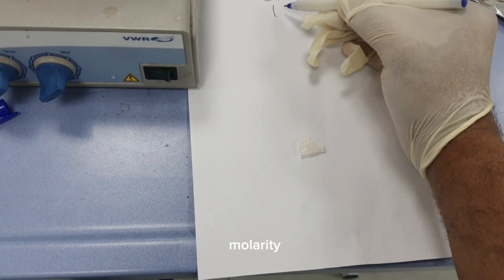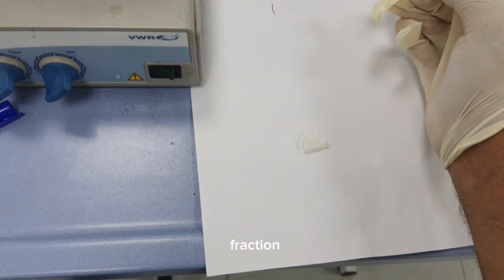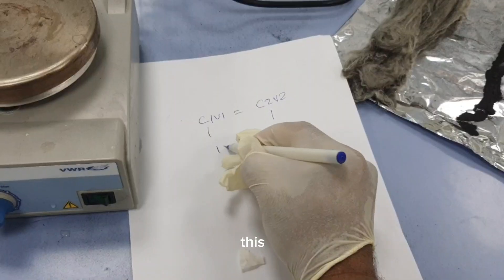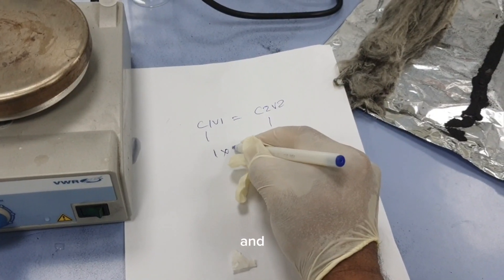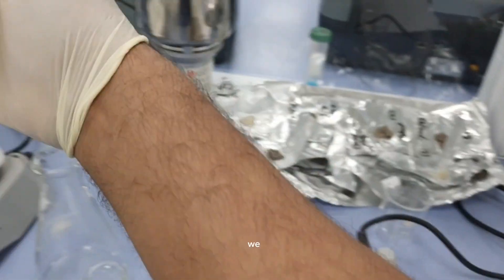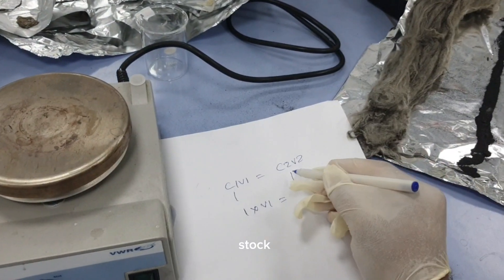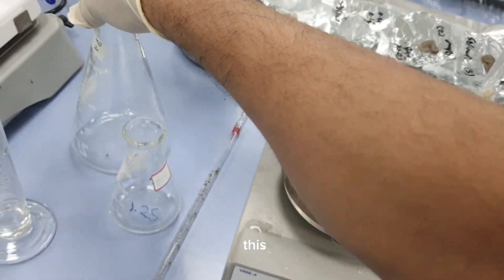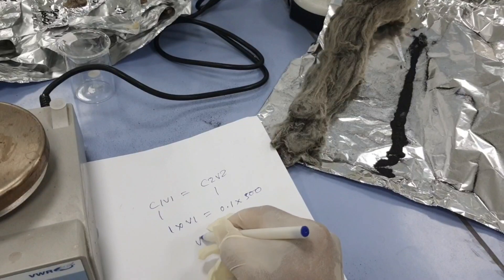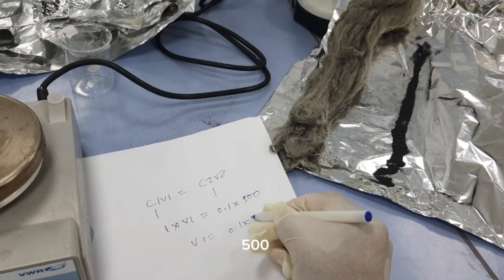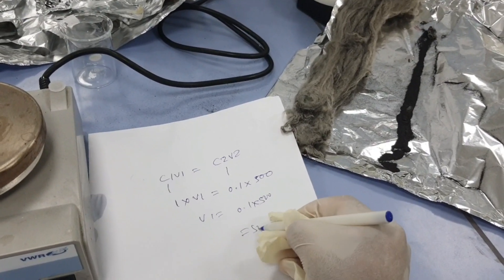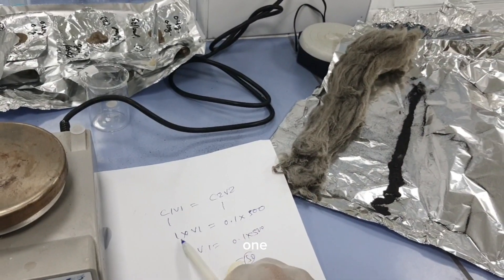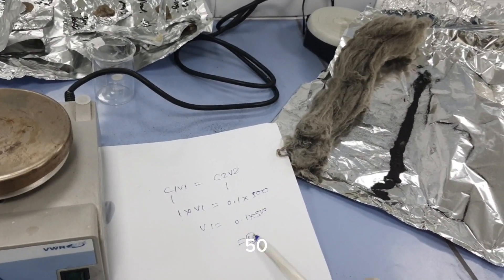Here our solution is one normal, and V1 is unknown. To prepare a lower stock of 0.1 normal in 500 ml, V1 would be 0.1 times 500 divided by 1, which equals 50 ml. So we have to take out 50 ml and add another 450 ml of deionized water.